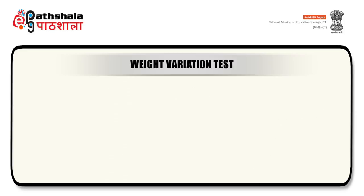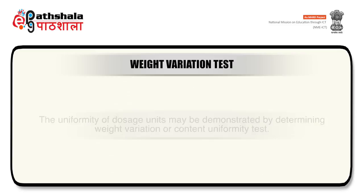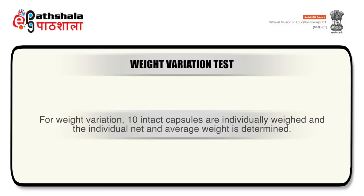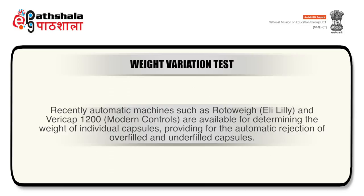The weight variation test: 10 intact capsules are individually weighed and net and average weights are determined. Requirements are met if all individual weights are within 90–110% of the average weight, or if not more than one of the 10 is outside 90–110% but within 75–125% of the average. Automatic machines such as Rotoway (Eli Lilly) and Vericap 1200 (Modern Controls) are available for determining individual capsule weights, providing automatic rejection of overfilled and underfilled capsules.